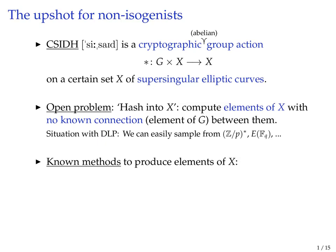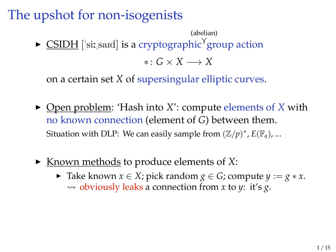Unfortunately for this isogeny setting this is much harder. If you just write down a random bit string it has an exponentially small chance of being a representative of an element of X. Here's a complete survey of known methods to produce elements of X. The first one: you take some known element of X, then pick a random element of your group and apply it.